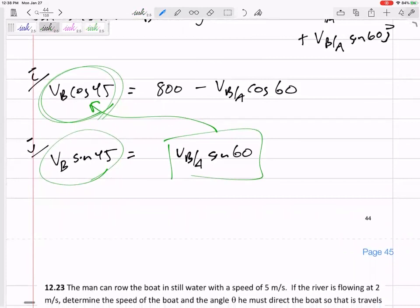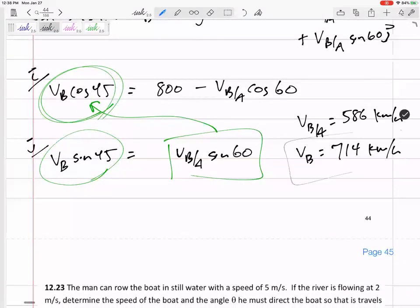All right. So math, math, math, math, math. VB slash A would be 586 kilometers per hour. VB, which is what I'm looking for, 714 kilometers per hour. So that is the magnitude of velocity B. That's what it was asking for.